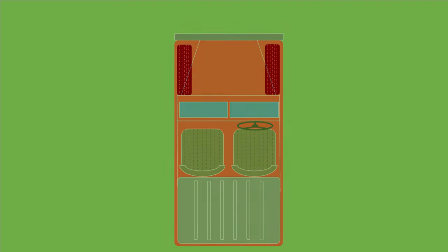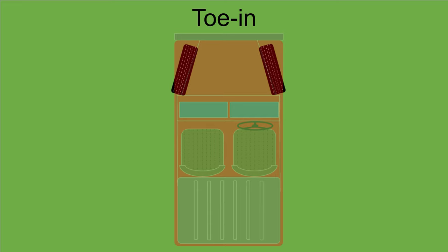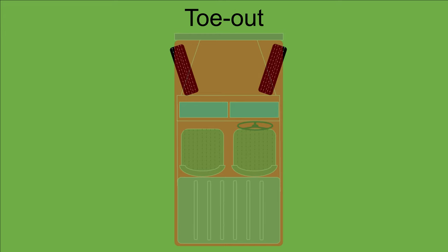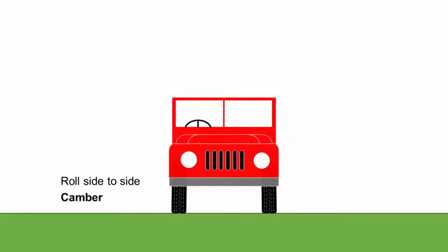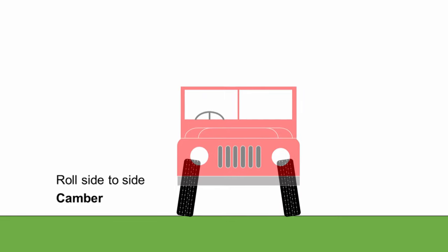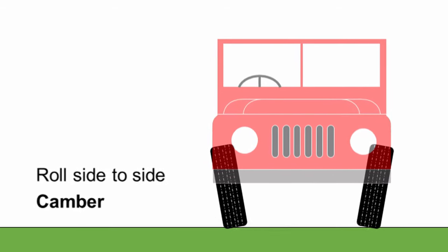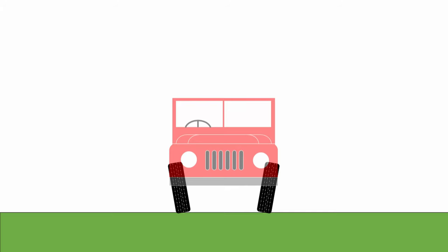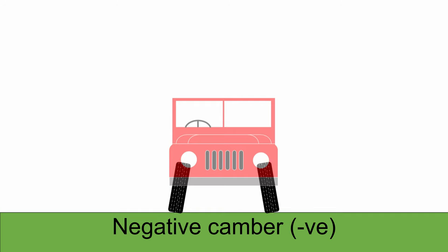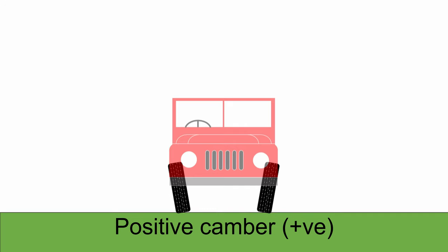Wheels can either toe in or toe out. If the front of the wheel is pointing in towards the body that's toe in, and if the front of the wheel is pointing out away from the body that's toe out. You can get toe in and toe out on front and rear wheels. When the wheel leans in or out at the top we call that camber. Camber can be set statically, and many vehicles are set up with some static camber, but camber also very often changes as the suspension travels. Camber can be positive or negative: if the tops of the wheels lean in that's negative camber, if they lean out that's positive camber. Camber is quite often a side effect of the suspension kinematics, which we'll discuss in later videos.